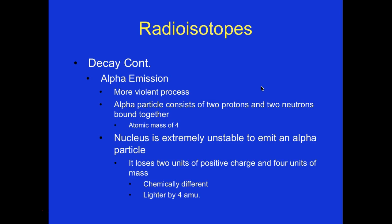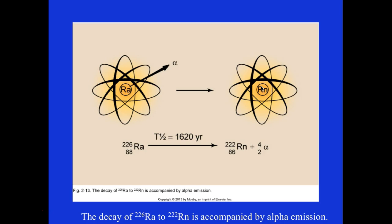With alpha emissions, it's a more violent process. The alpha particle consists of two protons and two neutrons bound together, giving an atomic mass of four. The nucleus is extremely unstable — it loses two units of positive charge and four units of mass, changing itself chemically and becoming lighter by four AMU. You can see it changes to a different element upon emitting an alpha particle.